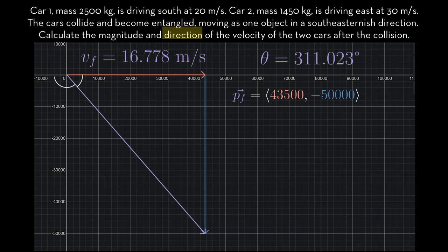You can also subtract 270 from this to express the direction as a bearing — that is, south 41.023 degrees east.